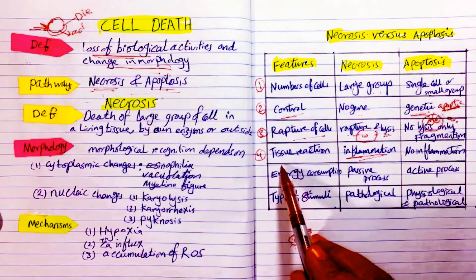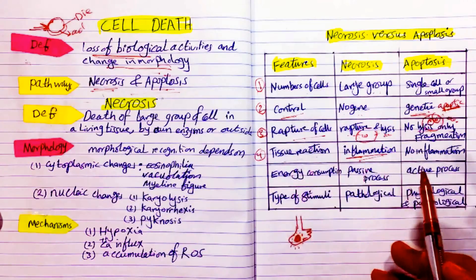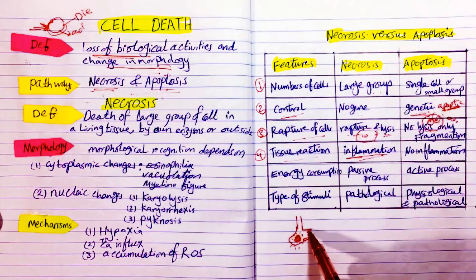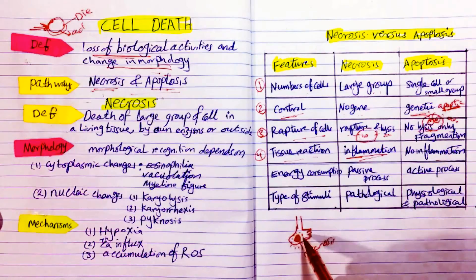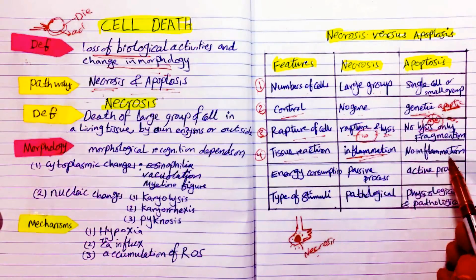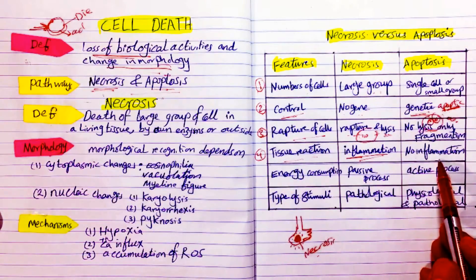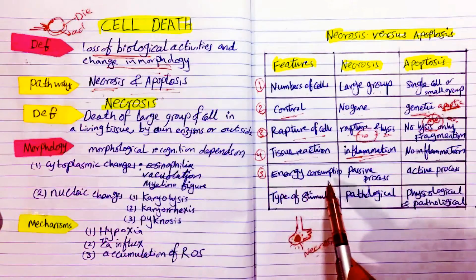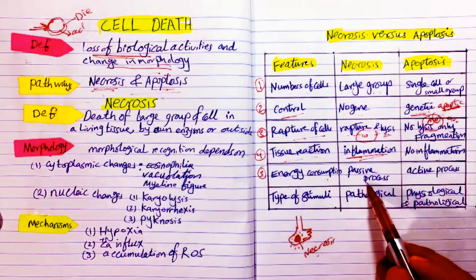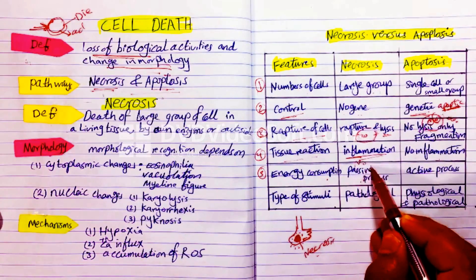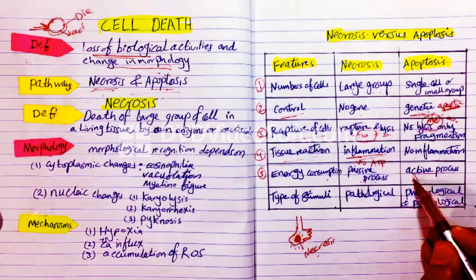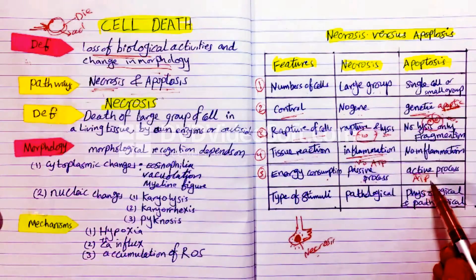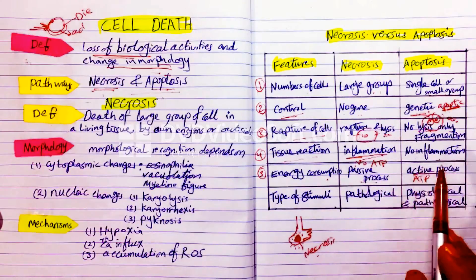The fourth feature is tissue reaction. In necrosis, around the necrotic area you will find an inflammatory reaction — inflammatory cells surrounding it. While in apoptosis there is no inflammation or tissue reaction around it. The fifth point, also very important, is energy consumption. In necrosis this is a passive process, so no ATP consumption. While in apoptosis this is an active process that requires ATP. This is a very important point to differentiate between the two pathways of cell death.